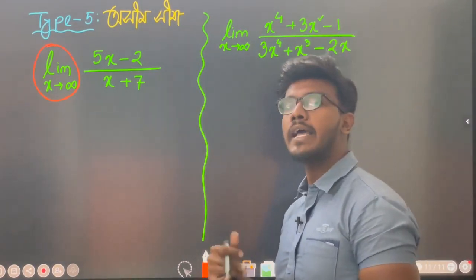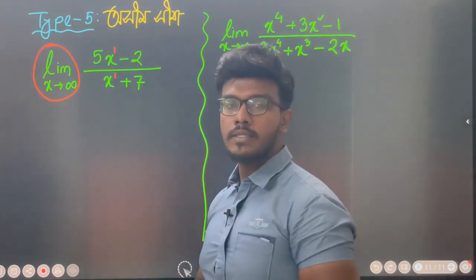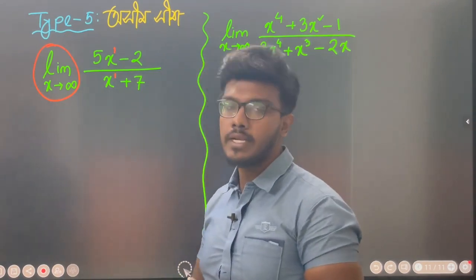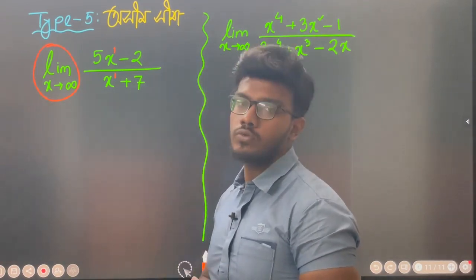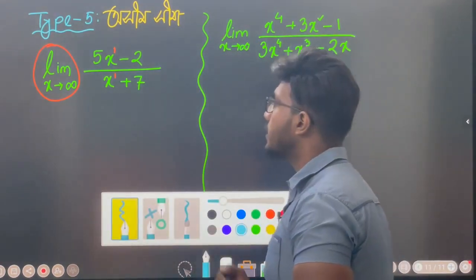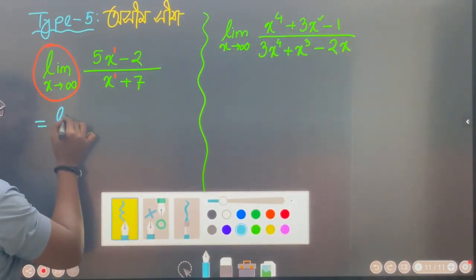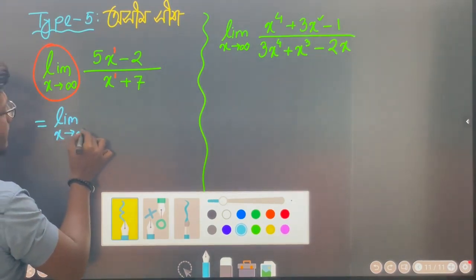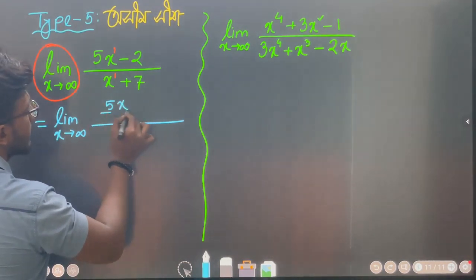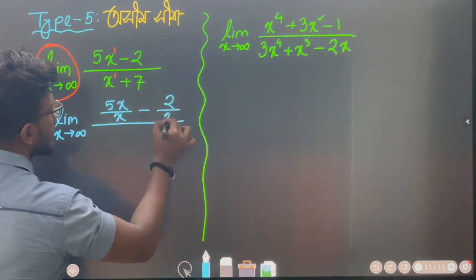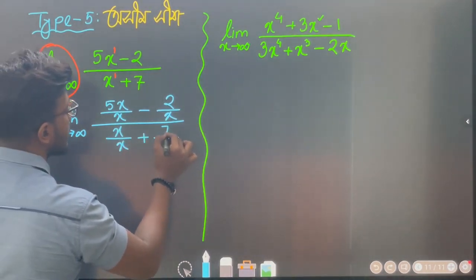If the power is high, providing x to the power 1 is low, that means 1. So we have x to the power 1. Including x to the power 1, we have to consider the term. We face 5x divided by x minus 2 divided by x. So we face x divided by x plus 7 divided by x.